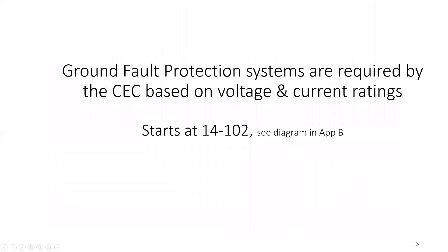Ground fault protection systems are required by the CEC based on the voltage and current ratings of the system. So depending on what the ratings are of the electrical system, you may be required to put ground fault protection in. It starts at 14-102, see diagram in Appendix B.